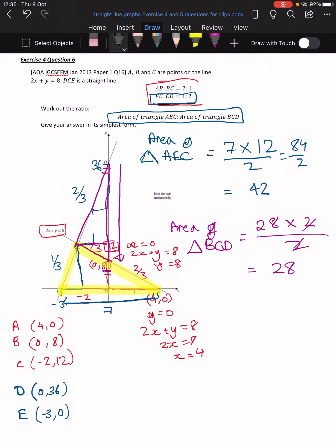So all we need to do now is put it together. So if we now put it in the form that it wants, so I'm just going to write area of triangle AEC to area of triangle BCD. So the area of AEC is 42. And BCD, we just worked out, is 28. Put it in its simplest form, the question says. So we divide by 14. All right, where's that calculator again? So that'll be three. That'll be two. And then we put it in its simplest form.